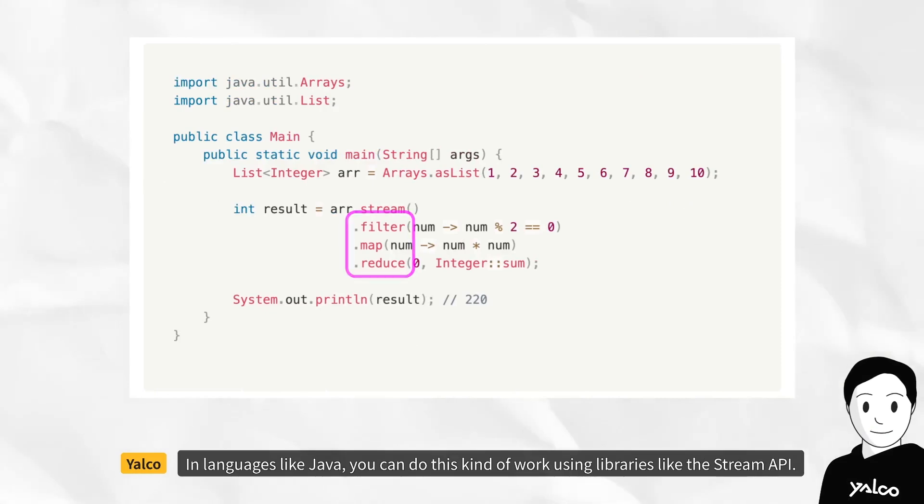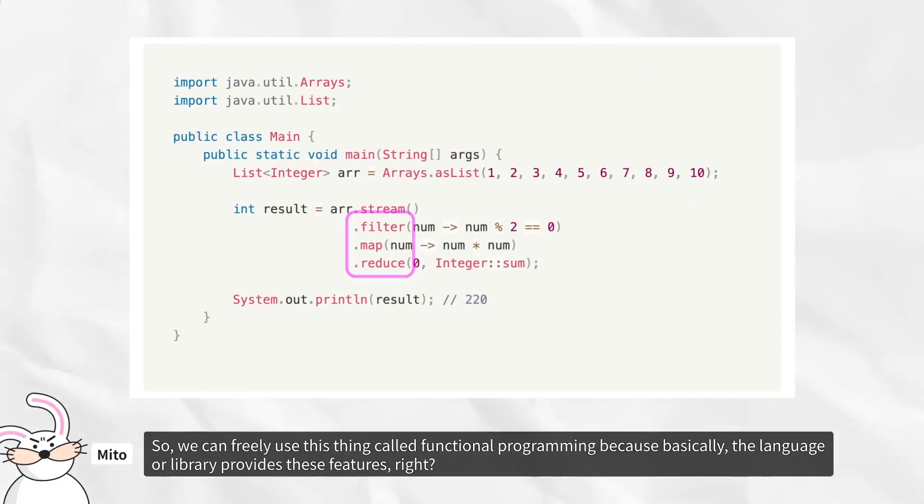Map changes each value to the return value when passed as an argument to the callback function. Lastly, reduce folds items into a single value using the callback function. Most modern programming languages provide features to handle collections functionally like this. In languages like Java, you can do this kind of work using libraries, like the Stream API.